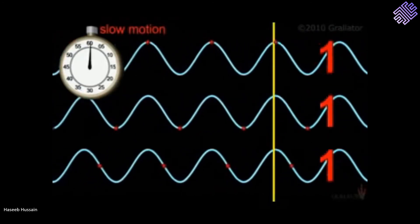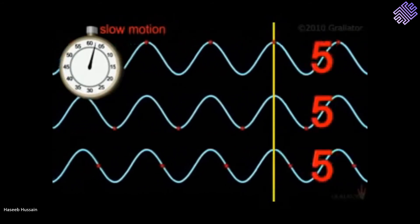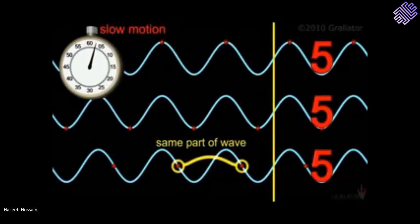It doesn't matter if you count peaks, trough or somewhere in between, as long as you count the same part of the wave every time passing the fixed point.